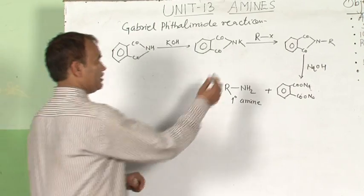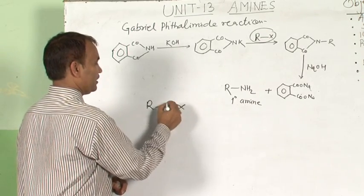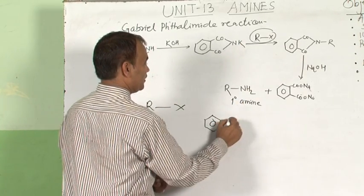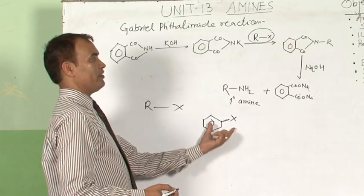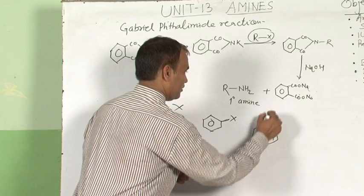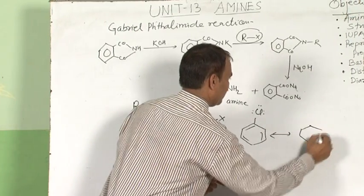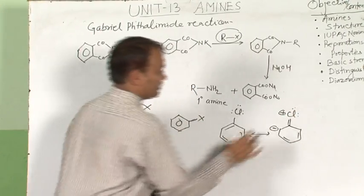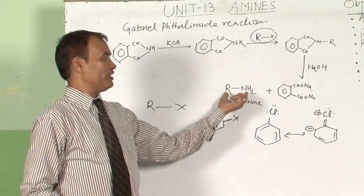The question is often asked: why can aromatic primary amines not be synthesized by Gabriel phthalimide reaction? The answer is that in alkyl halide, the R–X bond is weaker than in aryl halide. If aryl halide is used, the C–X bond has double bond character due to resonance, making it stronger. That is why the bond cannot break, and aromatic primary amines cannot be prepared this way.